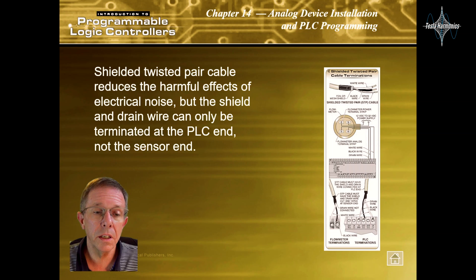Shielded twisted pair cable reduces the harmful effects of electrical noise, but the shield and drain wire can only be terminated at the PLC end, not the sensor end.